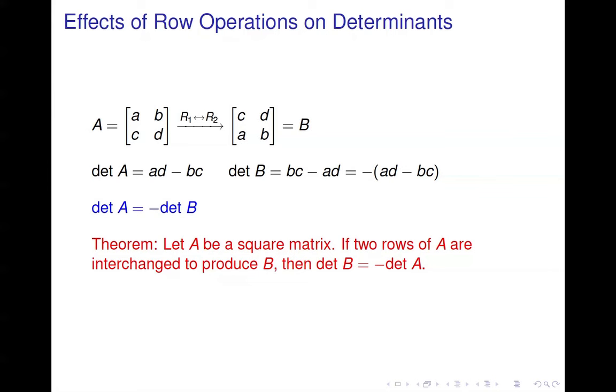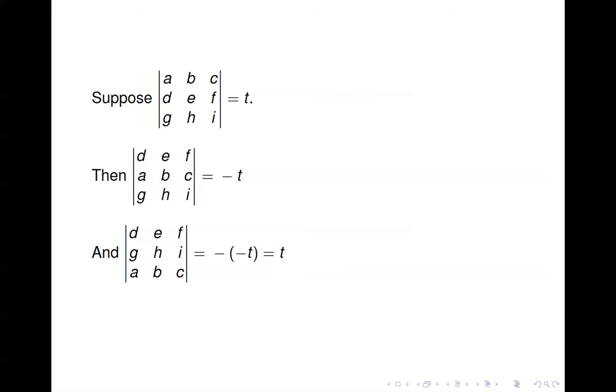If you swap rows again, you negate the determinant again. In this 3x3 example, suppose the determinant is T. We swap the first two rows, giving determinant negative T. Then we swap the second and third rows of that matrix, negating again to get negative of negative T, which brings us back to T. So two row swaps return you to the original determinant.